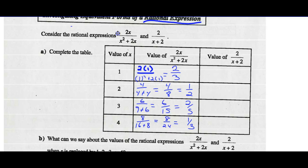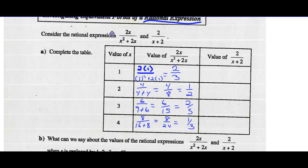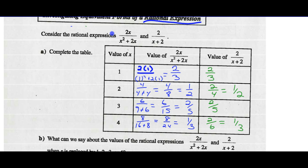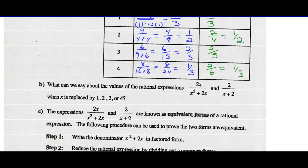Now let's look at the second expression. When x is 1, we get 2 over 1 plus 2, which is 3. When x is 2, we get 2 over 2 plus 2, which is 4, or 1/2. When x is 3, we get 2 over 3 plus 2, which is 5. And when x is 4, we get 2 over 4 plus 2, which is 6, or in lowest terms, 1/3. The values of the two rational expressions when x is replaced with 1, 2, 3, or 4 are equal.